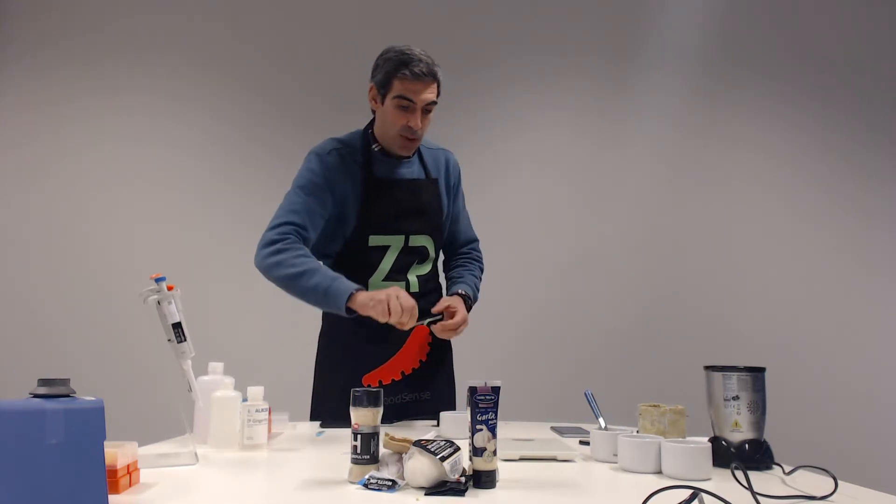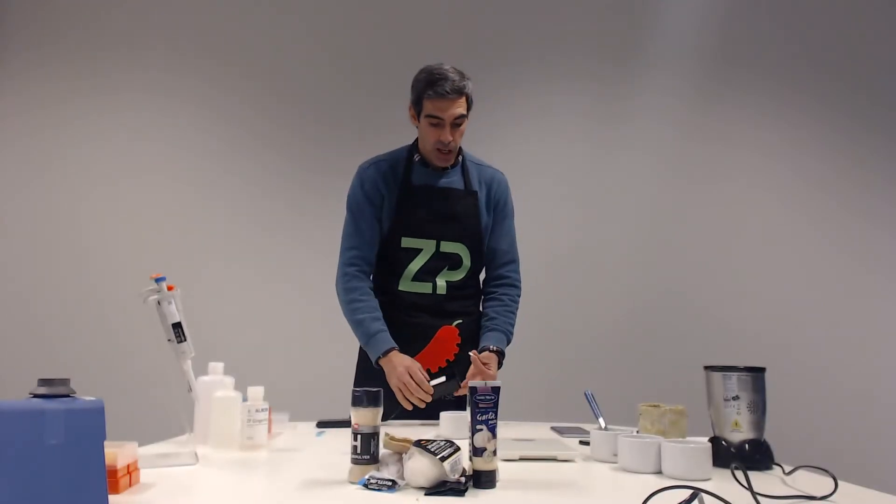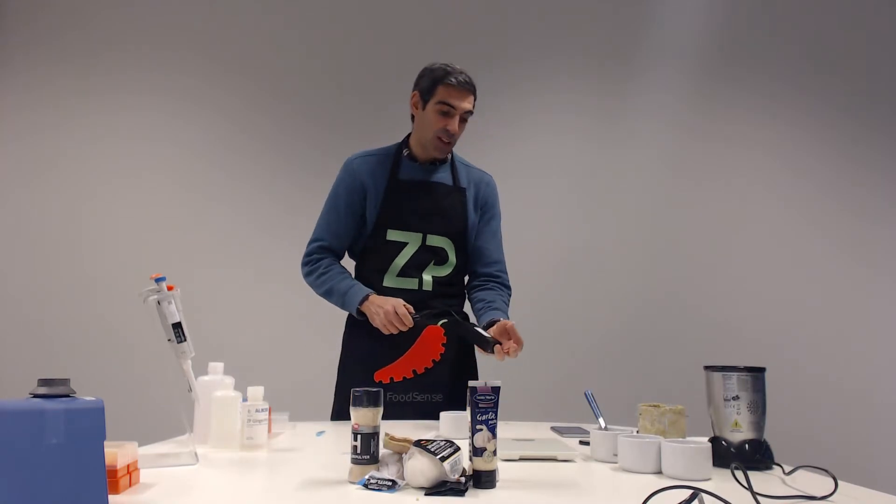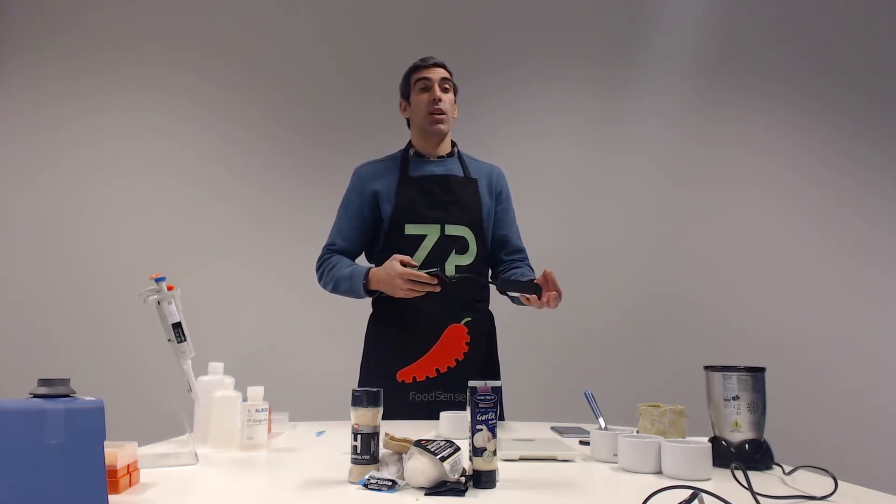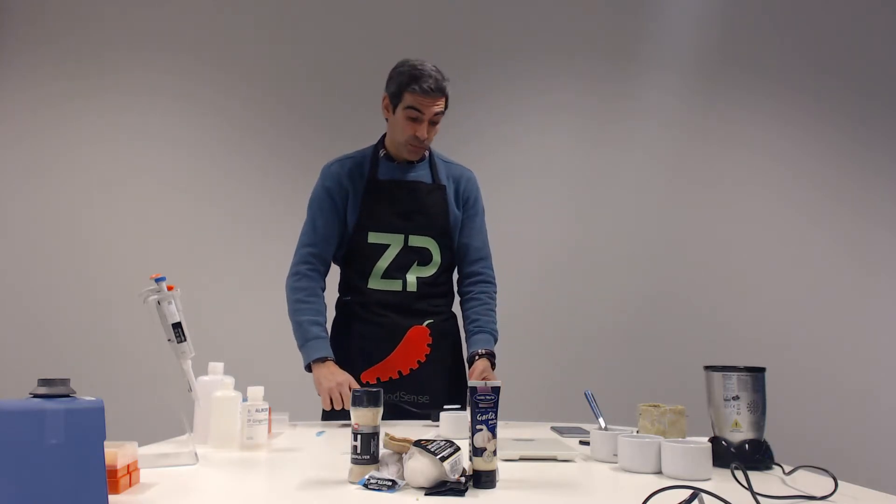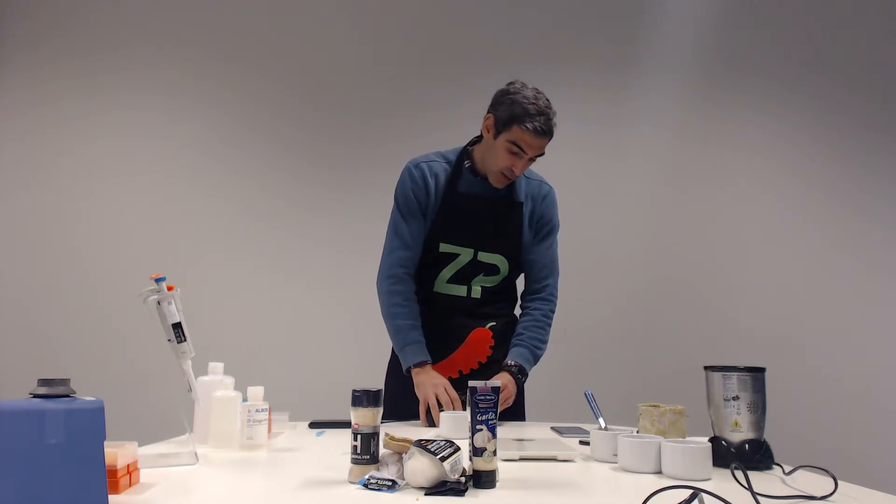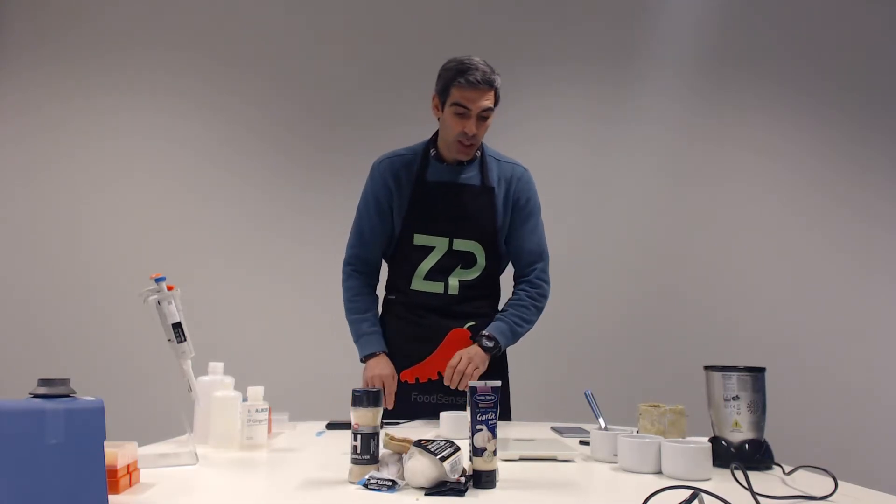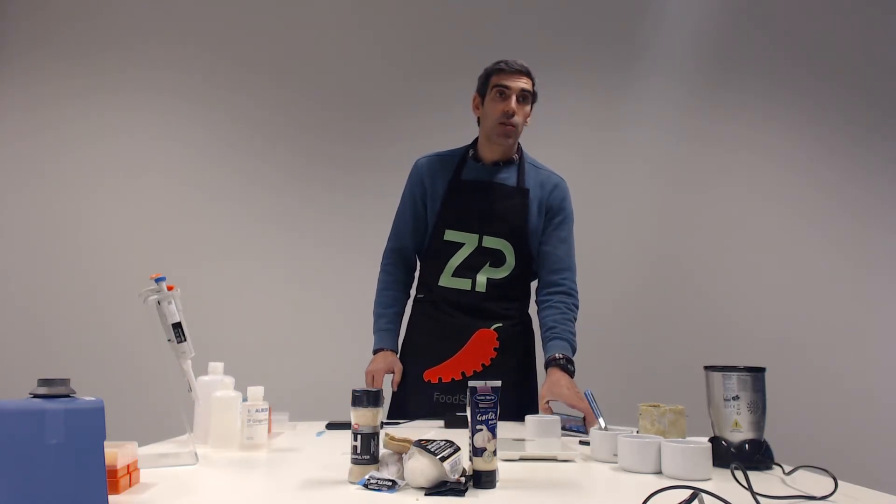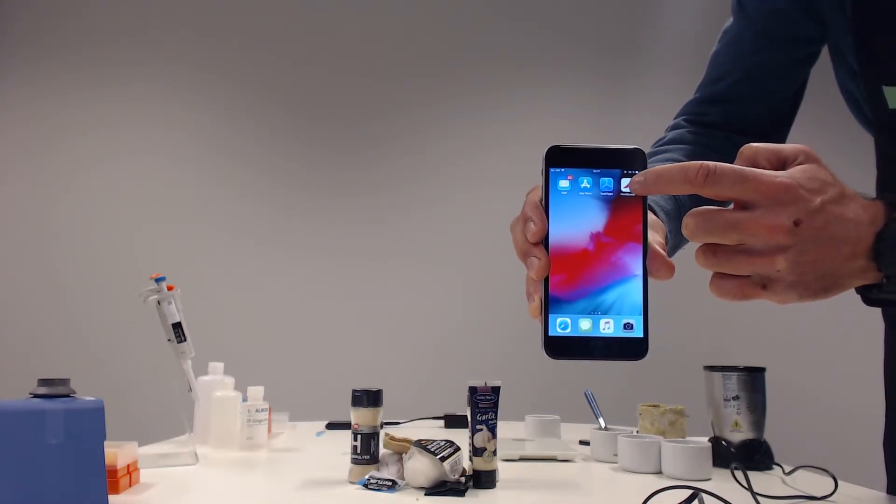I'm going to snap from this strip one of the ZP Ginger sensors and insert it in the FoodSense device. The FoodSense device is connected to a battery pack on USB 2 output. You want an output with five volts and with a current up to two amps output. So I'm connecting the sensor. Now I will need to open the app, the FoodSense app. I'll come a little bit closer to the camera so the user can see.